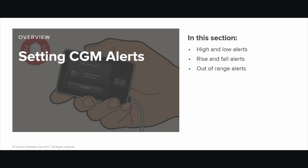The next topic in this section is out of range alerts. Your TSLIM G4 system alerts you with an out of range alert when the transmitter and pump are not communicating. Finally, you will learn some ideas about how to effectively manage the CGM information you receive.